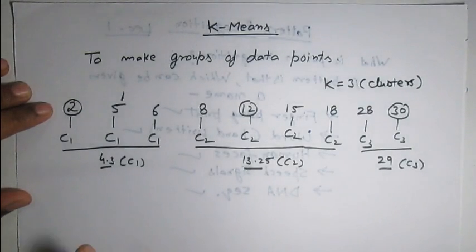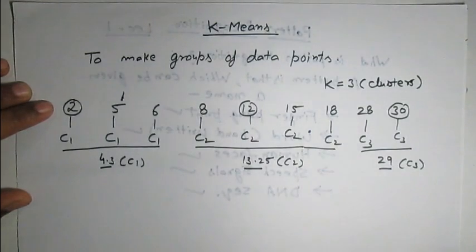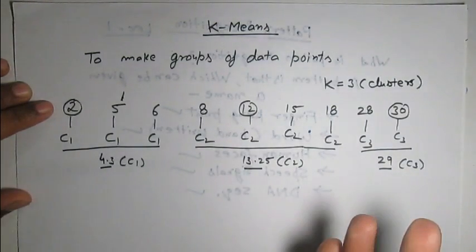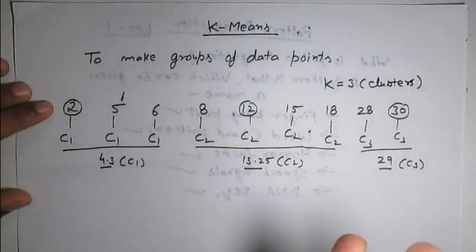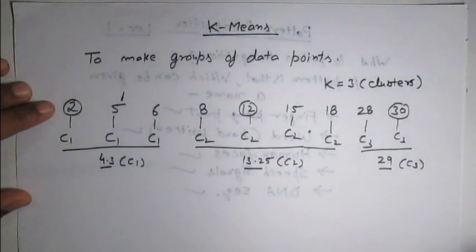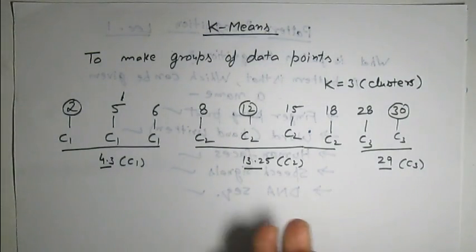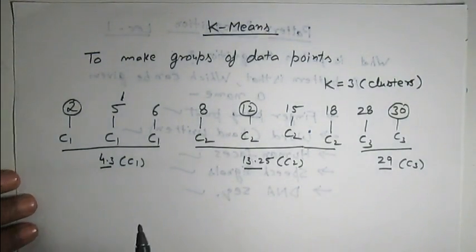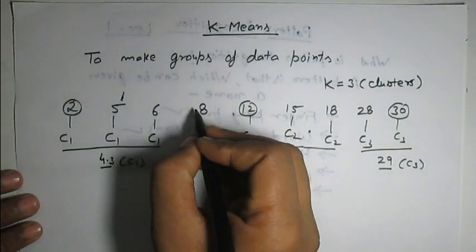This is an iterative process. Again we have to consider all data points, calculate the distance of all data points from each cluster center, and assign all data points the label of the cluster center which is closest to that data point.